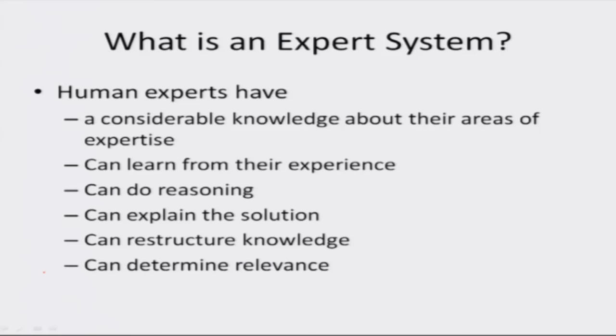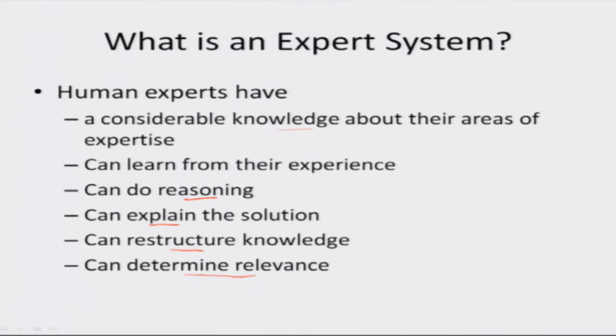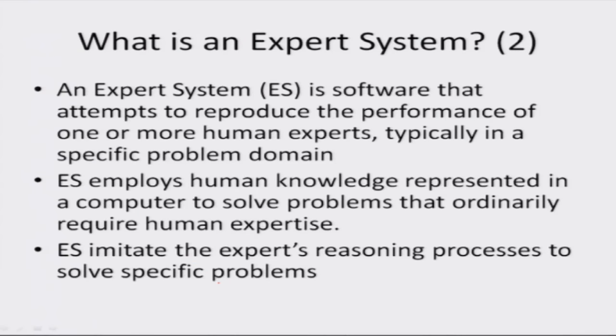An expert system is a computer program that emulates human experts. Human experts have several capabilities: they have considerable knowledge about their areas of expertise; they can learn from experience, modifying or updating their mental facts, rules, and understanding of a domain based on worldly experience; they can do reasoning, deriving new knowledge from existing facts or rules; they can explain the solution reached, including why and how; they can explain the facts and rules used; they can restructure knowledge by modifying relationships between concepts; and they can determine relevance — automatically identifying which rules apply to a given problem.